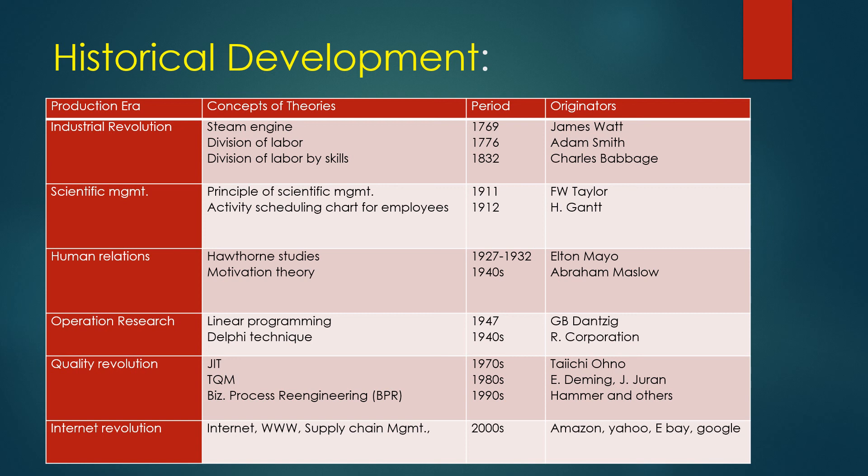The internet revolution, including the dot-com era and the World Wide Web, along with web and supply chain management developments, were originated by companies such as Amazon, Yahoo, eBay, and Google during the 2000s.